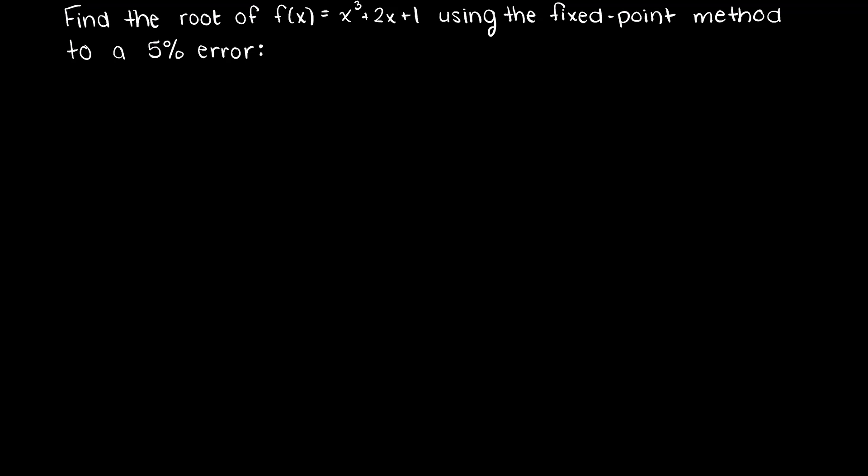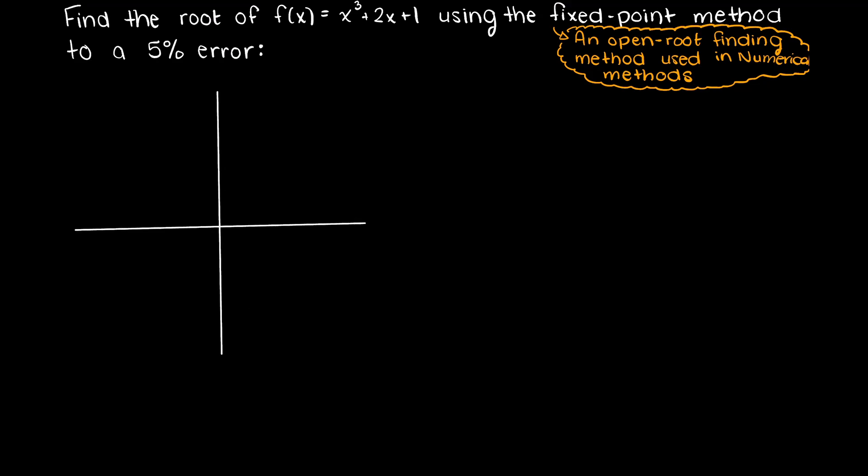If you remember from our previous video, the fixed point method is an open root finding method used in numerical methods. This question is asking us to find the point at which this function crosses the x-axis, which we also know as the function's root, so let's just quickly throw in a graph of what this function looks like.